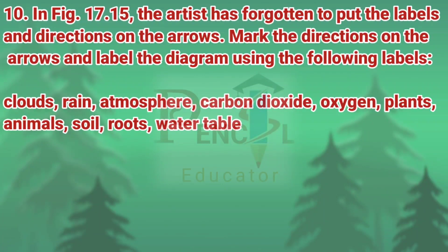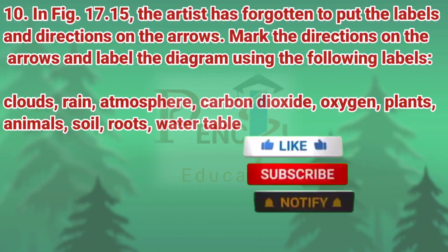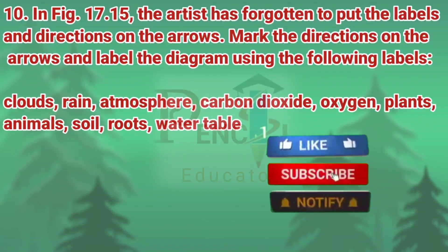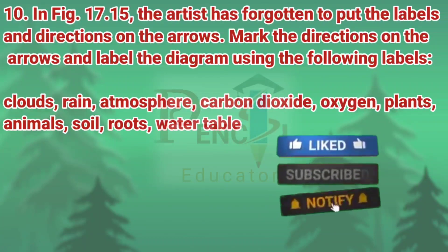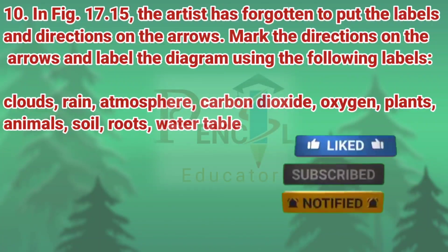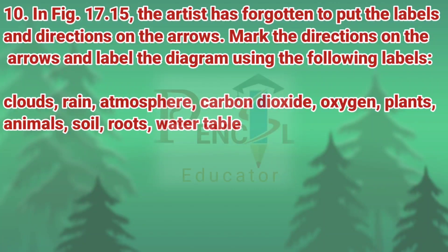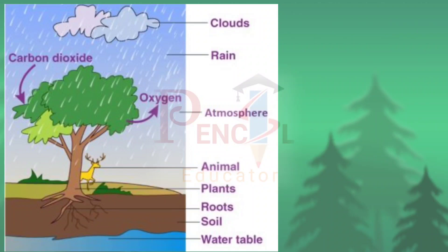Tenth question: In figure 17.15, the artist has forgotten to put the labels and directions on the arrows. Mark the directions on the arrows and label the diagram with the following labels: clouds, rain, atmosphere, carbon dioxide, oxygen, plants, animals, soil, roots, water table. The diagram has been given with the labels and arrows.